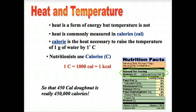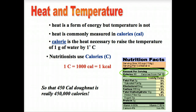One calorie is the amount of heat required to raise the temperature of one gram of water by one degree centigrade. Nutritionists use a large C, which stands for kilocalories. Beware — this is a thousand times the small C calories. An adult needs two to three thousand large C calories a day, meaning two to three million small C calories each day.